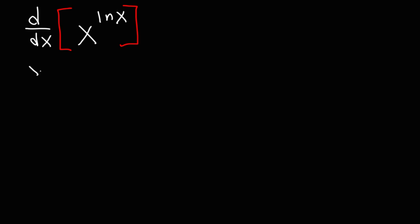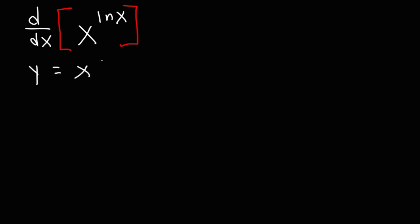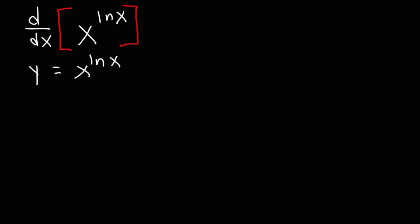The first thing we're going to do is set this expression equal to y. Our goal is to find dy/dx, because that's going to equal the derivative of that expression. But before we take the derivative of both sides of this equation, we need to take the natural log of both sides first. The reason why we want to do that is because there is a special property of logarithms that we can employ here.